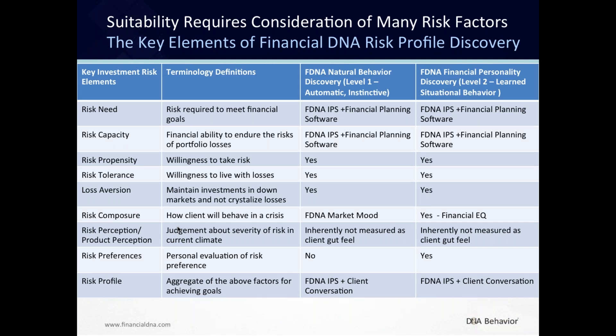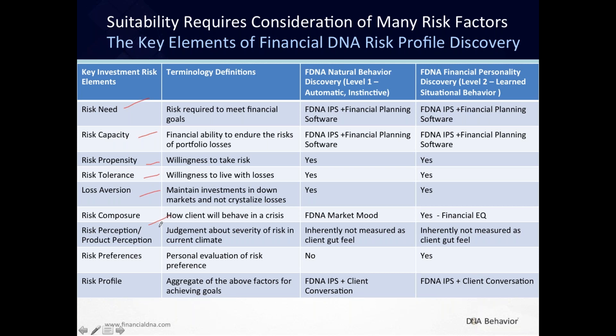We get a lot of questions on the key elements of risk, especially from Canada, which has been a real growth market. We list nine points showing how Financial DNA meets those requirements — each with its own process. It really supports the know your client rule, mitigating risk for the advisor and the firm. We usually provide this chart to the compliance officer to show how Financial DNA supports the know your client rule.